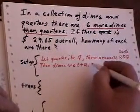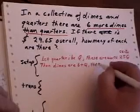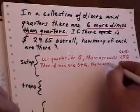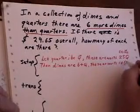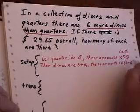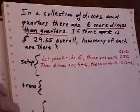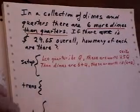Dimes are 10 cents each, so you could say these are worth 10 times the 6 plus Q cents. So that's one way to do the setup.